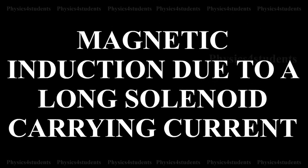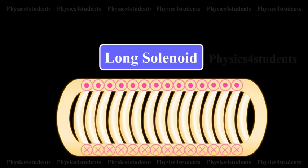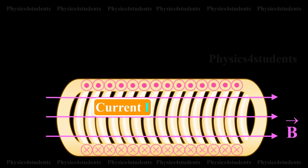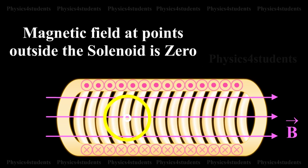Magnetic induction due to a long solenoid carrying current. Let us consider an infinitely long solenoid having n turns per unit length carrying a current of i. For such an ideal solenoid, whose length is very large compared to its radius, the magnetic field at points outside the solenoid is zero.